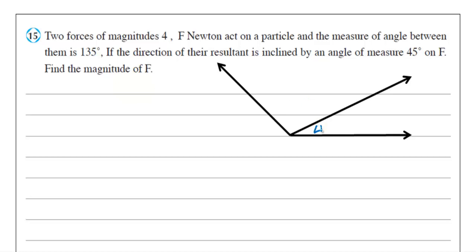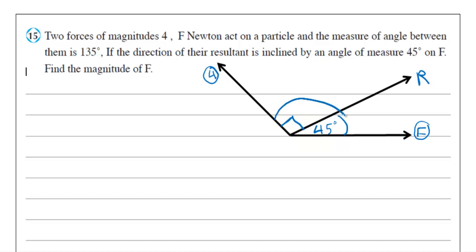So here we have an angle of measure 45, and here is the resultant R, and here we have F. The second force will be 4, and this angle equals 90. Why 90? Because the angle between R and F equals 135, and 135 minus 45 equals 90 degrees.